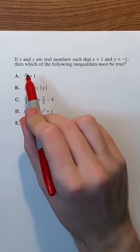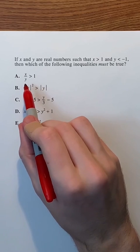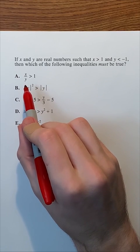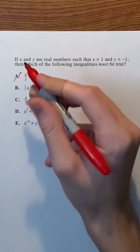In A, we have x over y, so a positive number over a negative number, which means that this fraction will always be negative, and a negative fraction will never be greater than 1, therefore A is incorrect.